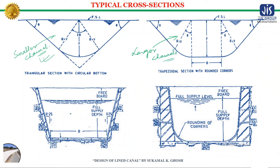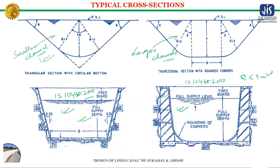According to IS 10430:2000, a trapezoidal section with or without rounded corners is used for all types of lined canals. A cup-shaped cross section should be used for distributaries or minor canals where the discharge is less than or equal to 3 m³/s.